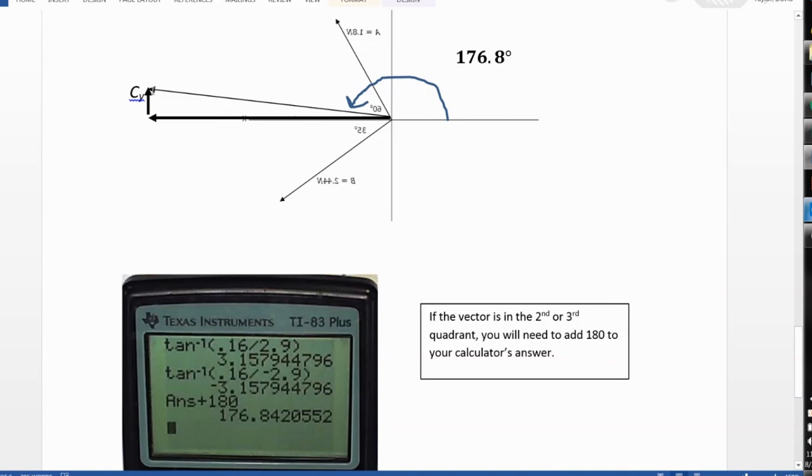It's pointing into the second quadrant. So, if your answer is ever in the second or third quadrant, you will need to add 180 degrees to your calculator's answer. So, you see here, positive y component and negative x component gave me negative 3.16 degrees. So, I had to add 180 degrees to that to come up with my actual angle of the answer for this situation of 176.8.